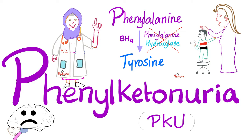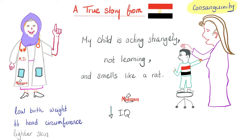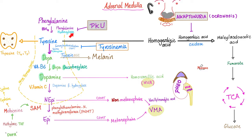Let's talk about phenylketonuria. Phenylketonuria is a disease where there is too much phenylalanine in the blood. The road ahead of phenylalanine is blocked — the enzyme phenylalanine hydroxylase is deficient, or its cofactor BH4 is missing. Phenylalanine cannot become tyrosine, so phenylalanine goes up and tyrosine goes down and becomes essential. This accumulation of phenylalanine is very toxic, especially to the brain, and can lead to intellectual disability, low birth weight, decreased head circumference, lighter skin due to lack of melanin, and a characteristic musty smell.